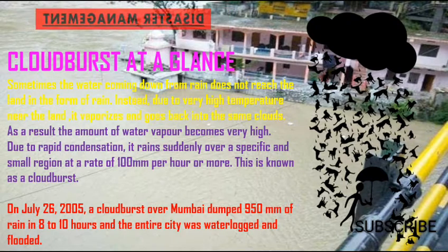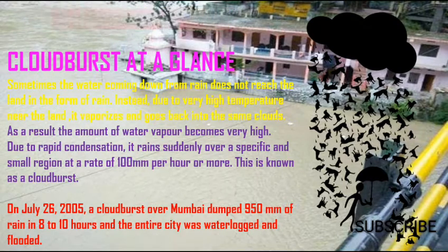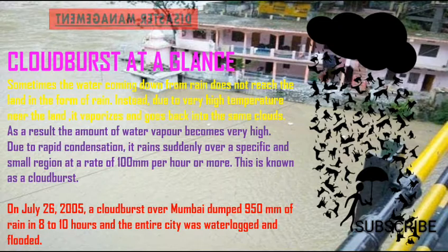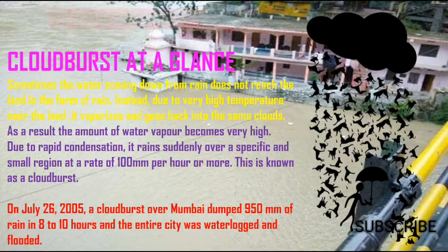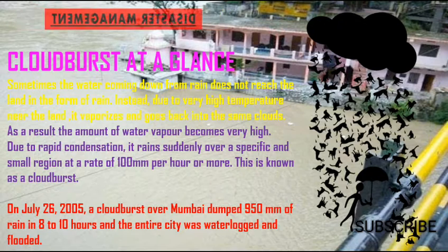On July 26, 2005, a cloudburst over Mumbai dumped 950 mm of rain in 8 to 10 hours, and the entire Mumbai city was waterlogged and flooded.